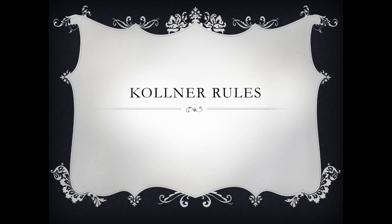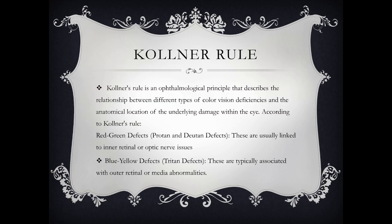Assalamu alaikum, my name is Dr. Mohamad Saif Ali Memon and today's topic is Kollner's Rules. Kollner's Rules is an ophthalmological principle that describes the relationship between different types of color vision deficiencies and the anatomical location of the underlying damage within the eye.